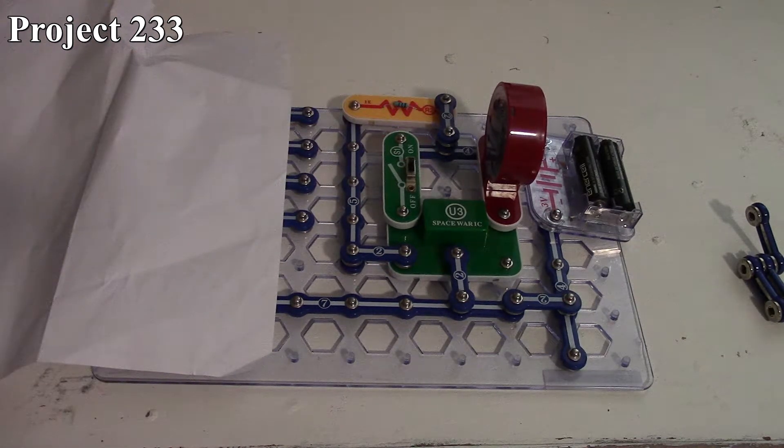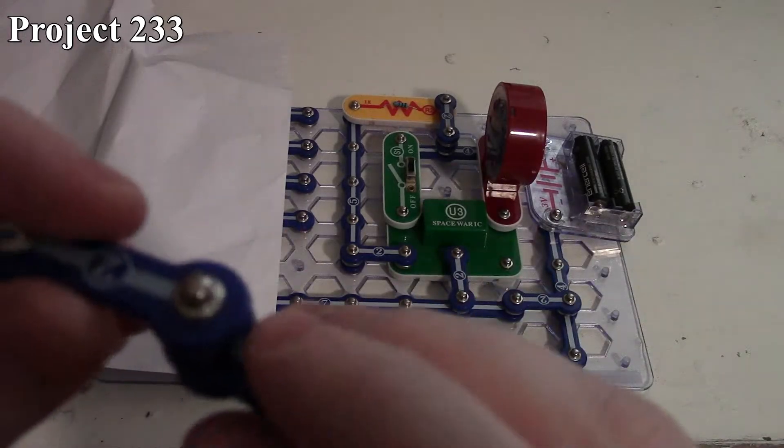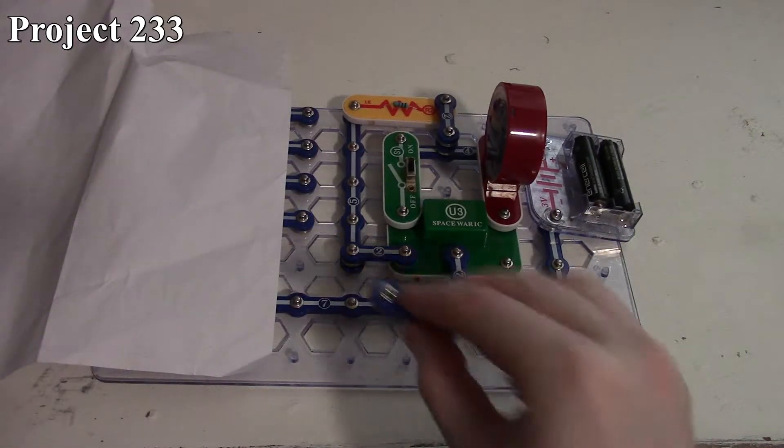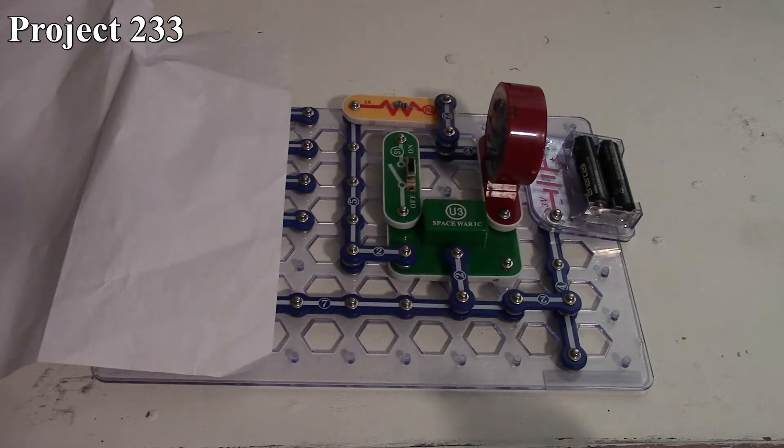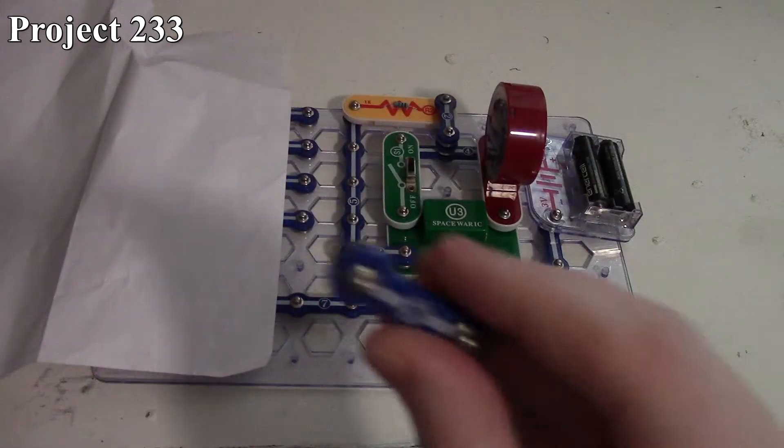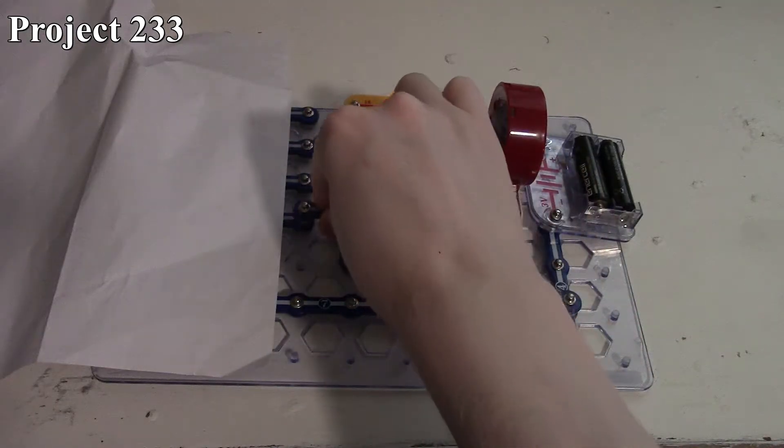Then you turn your circuit on and the other player would come along, take his two snap, and put it where he thinks the connection is that you put your two snap on.